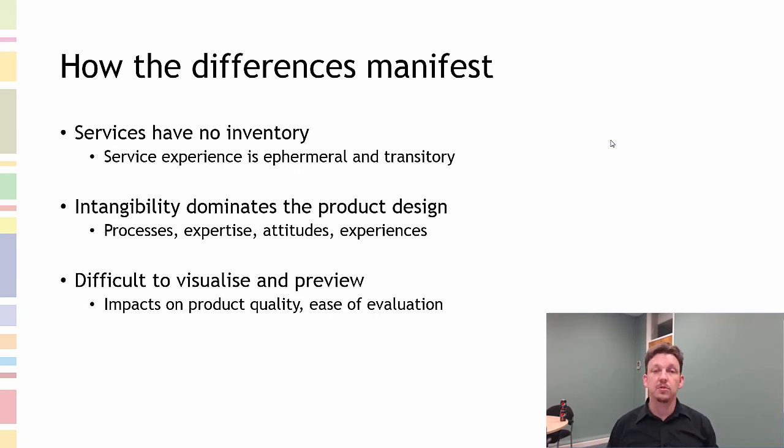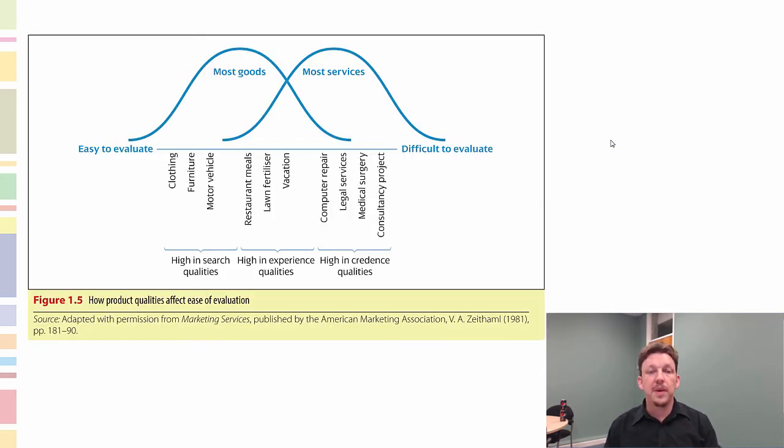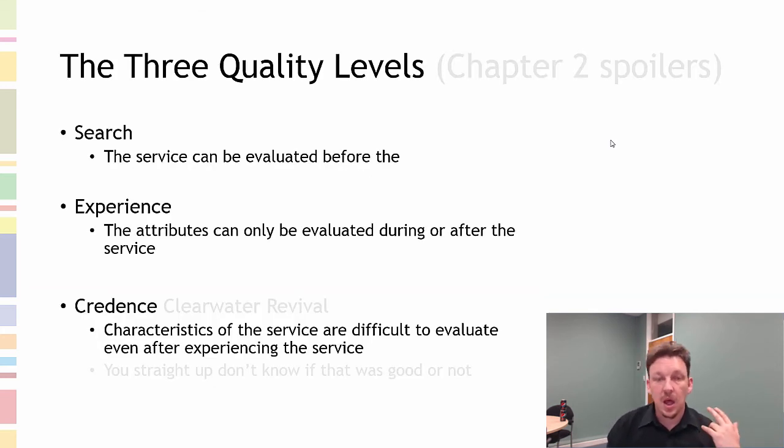If it's difficult for you to imagine the product, it's also difficult for you to establish what your expectations are going to be. And we deal with that particular framework when we talk about these three types, three quality levels. And this is significant. Of the models that we cover in the first chapter, this is one of the ones with a huge impact. So search, experience, and credence.